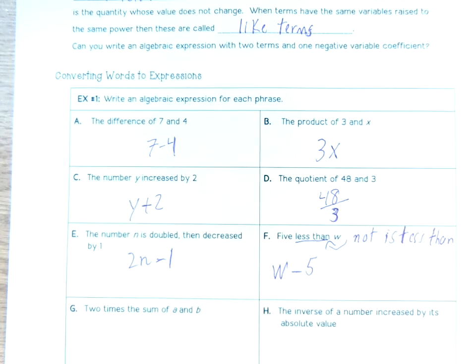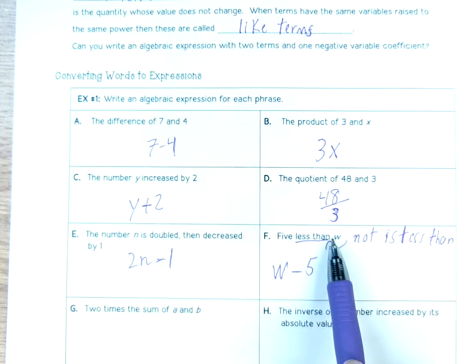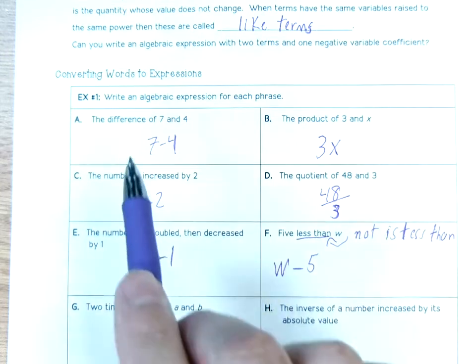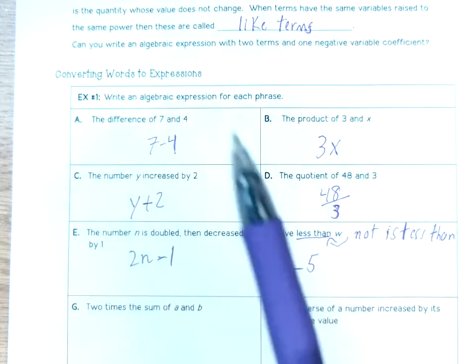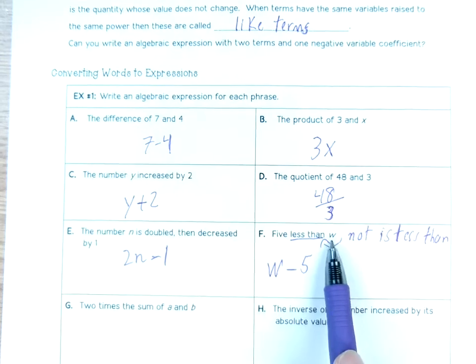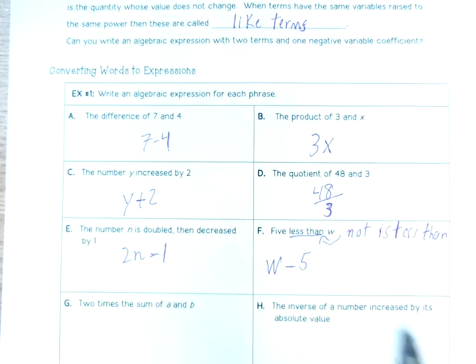Since it's just 'less than,' we do subtraction. And this is the opposite order of subtraction — w comes first here. So we take w and subtract 5: 5 less than w is w minus 5.